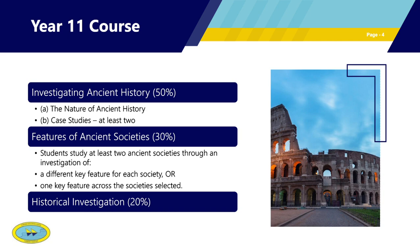The second part of Year 11 is Features of Ancient Societies, worth 30%. We'll look at two societies. First, New Kingdom Egypt — building on Deir el-Medina — with a close study of the role of women. Second, Power and Image in Ancient Rome, focusing on the early empire when the republic ended. We'll study emperors and monuments, including the Colosseum — an amphitheatre built in the centre of Rome to hold gladiatorial contests.